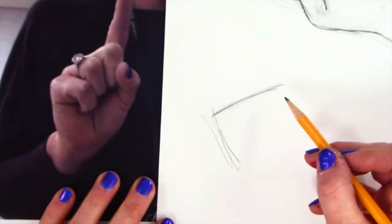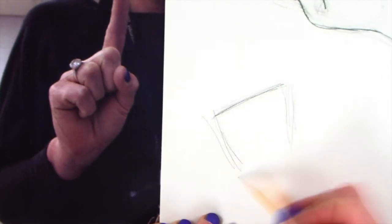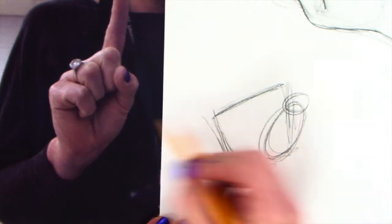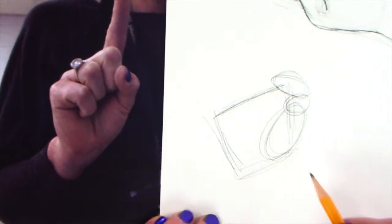And I approach this one very much the same. I first find that square of the palm. Then I find that thumb muscle. Then I go ahead and find all the additional joints of my fingers.